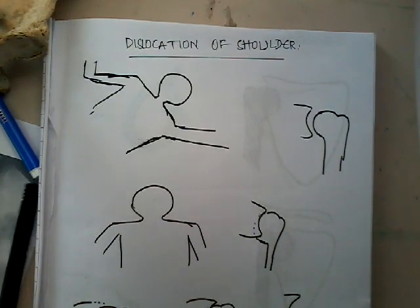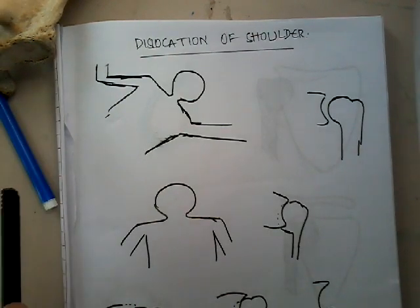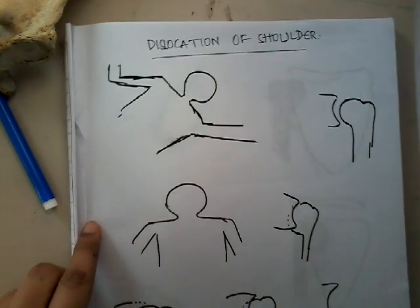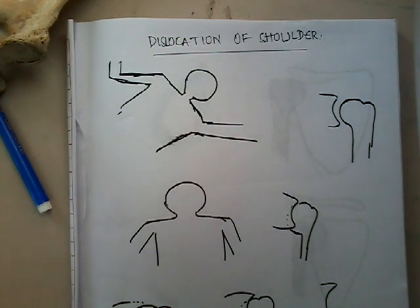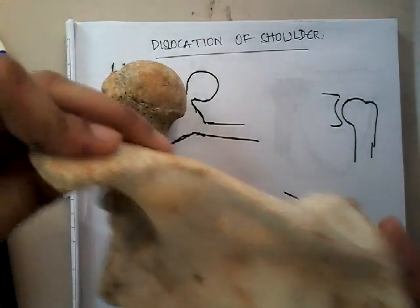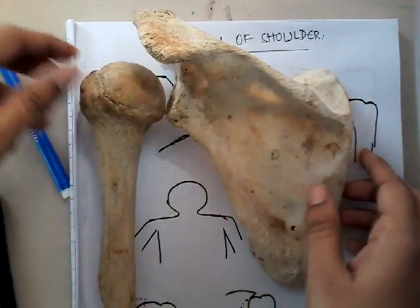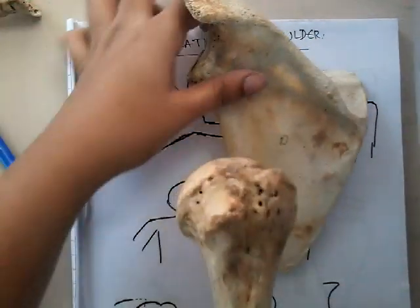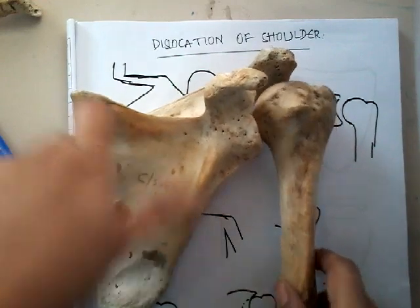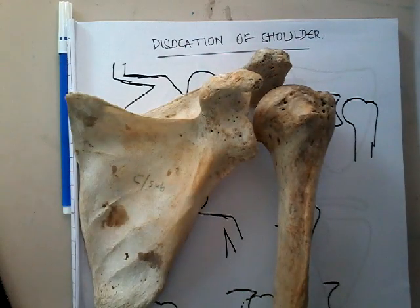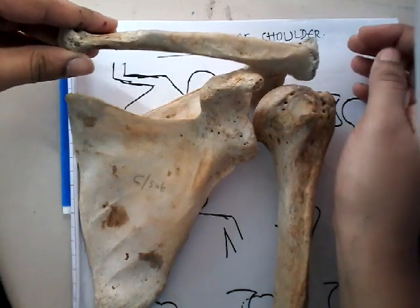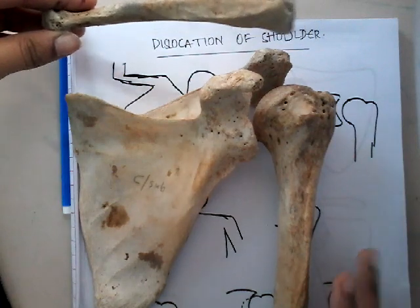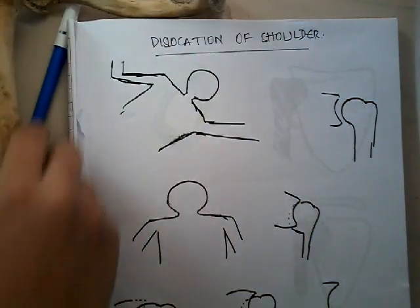Hello friends, let us learn a new topic today — dislocation of the shoulder joint. It's really very important from the exam point of view and also it is one of the most common disorders. So, dislocation of the shoulder joint: this is the humerus and this is the scapula, shown from the front, with the clavicle as well.